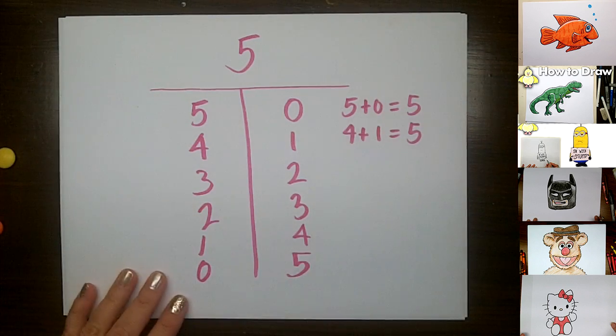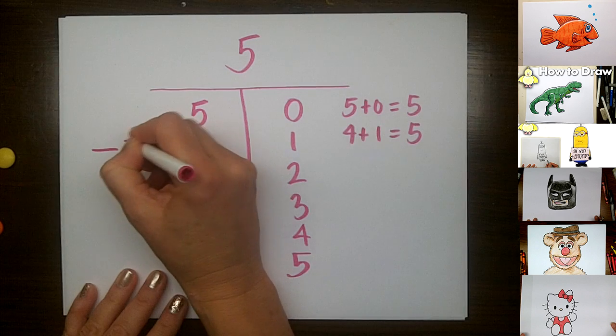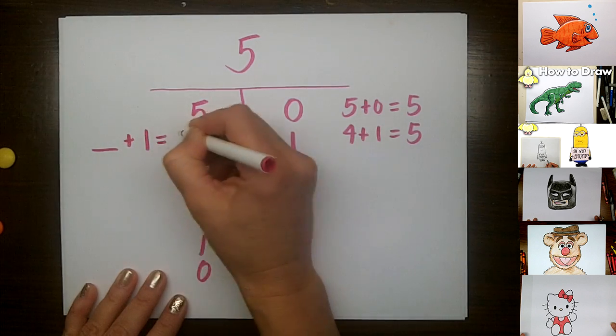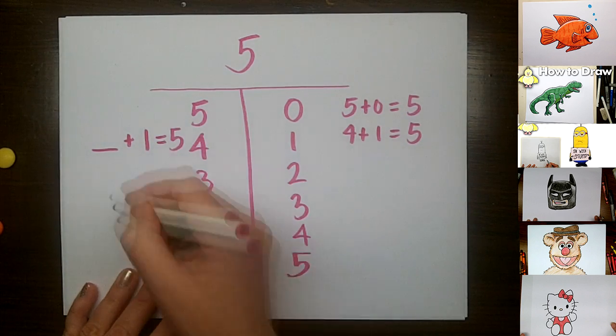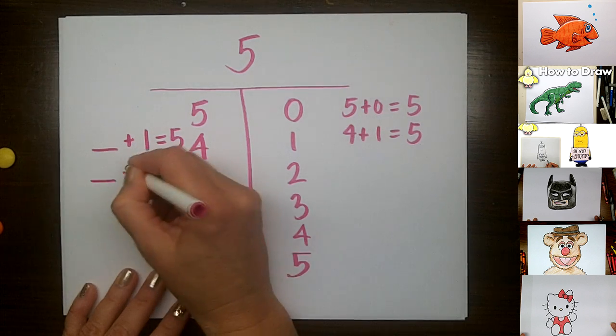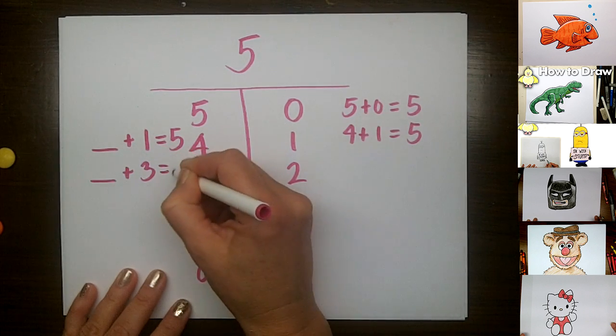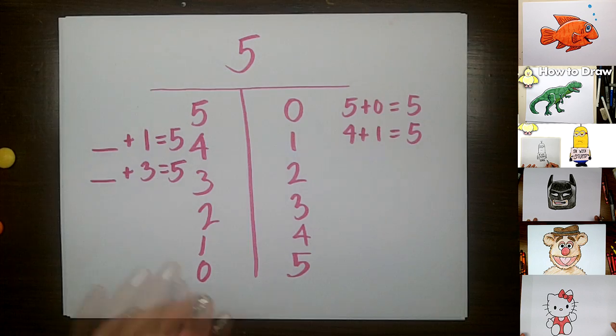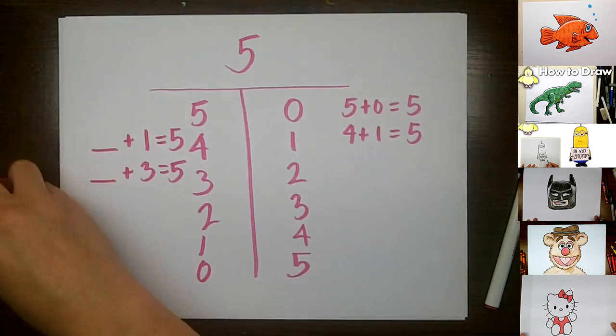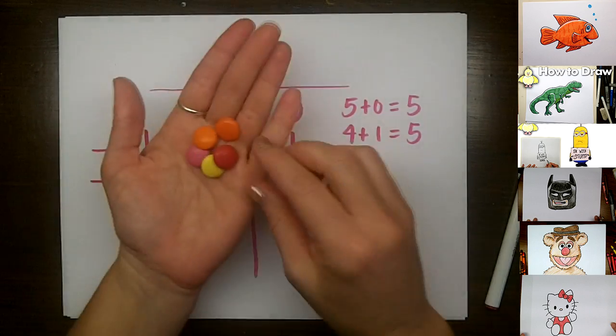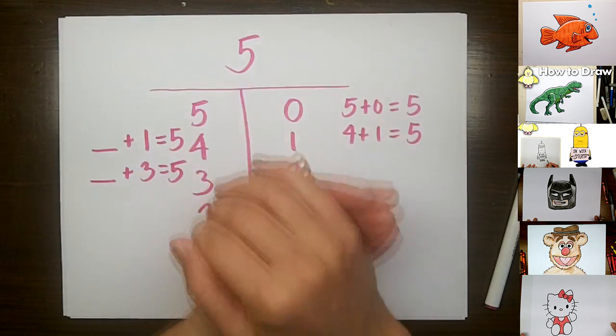You could do this another way where you leave out numbers. So you could say what plus 1 equals 5, or what plus 3 equals 5. And you can either solve it by looking at this chart, or a much more fun way to solve that would be to use the actual things.